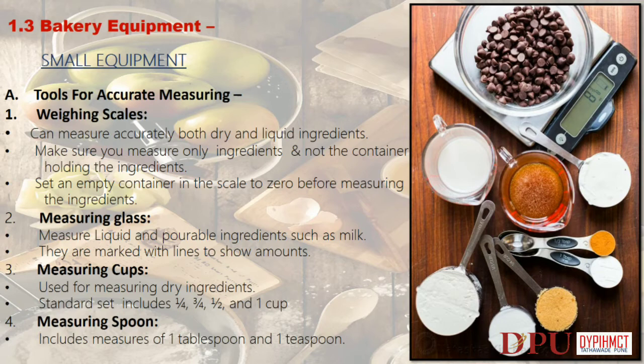Measuring glass measures liquid and pourable ingredients such as milk; they are marked with lines to show amounts. Measuring cups are used for measuring dry ingredients; a standard set includes 1 quarter, 3 quarters, half, and 1 cup. Measuring spoons include measures of 1 tablespoon and 1 teaspoon.